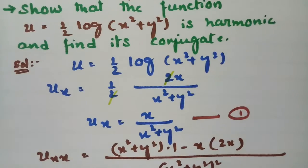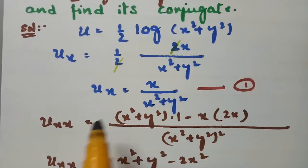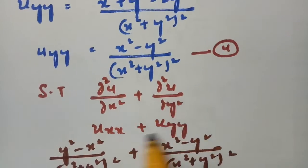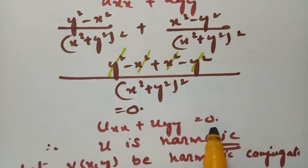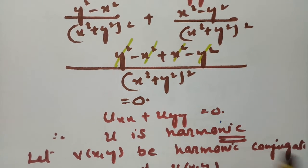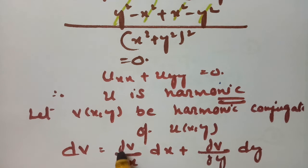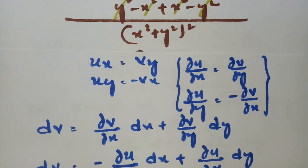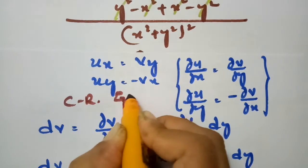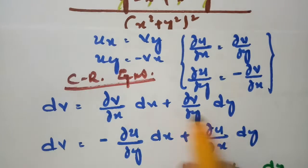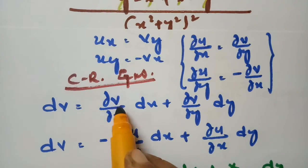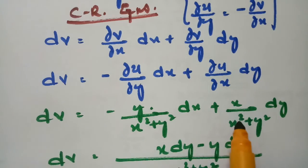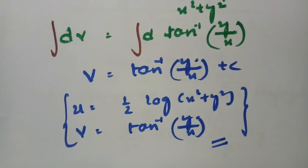In summary: u is given, we computed the double derivatives with respect to x and y, and their sum equals zero, satisfying the Laplace equation — so u is harmonic. To find the harmonic conjugate, we used dv = (∂v/∂x)dx + (∂v/∂y)dy and applied the CR equations to convert everything in terms of u, giving v = arctan(y/x).